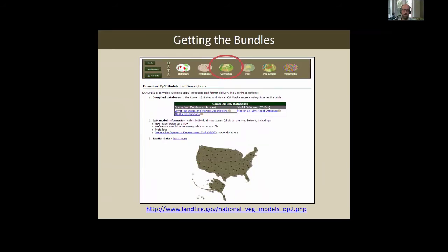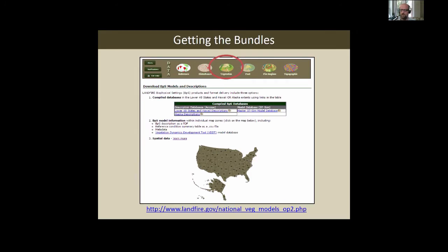To get the model bundles, go to landfire.gov, click the vegetation button at the top and start drilling down. You can click on a map zone and get a PDF file with all the descriptions — for Michigan, for example, there are between 200 and 300 pages of descriptive material. You can also download the databases to run the models, or get the compiled description databases to do queries of all descriptions or a subset.